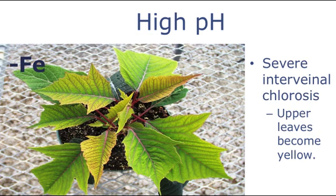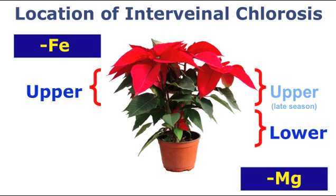With more severe symptoms, the upper foliage can turn a complete yellow. Keep in mind that symptoms of both iron and manganese deficiency are similar — in both cases the leaves exhibit interveinal chlorosis. The location of these symptoms will help you diagnose which problem is occurring. Iron deficiencies occur in the upper or younger leaves. Also keep in mind that early magnesium deficiencies occur on the lower foliage, but late season deficiencies which occur after bract formation can be confused with iron deficiency because these symptoms can occur on the upper foliage.